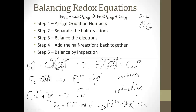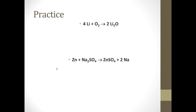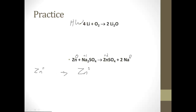Let's practice one together, and the other one you'll have to do on your own — I want to see it balanced in your homework notes. I'll work through this one with you. First, assign oxidation numbers: zinc is zero, SO4 is minus 2, so each Na is plus 1. On the product side, SO4 is minus 2, so the zinc is plus 2. And the 2 Na products are zero.